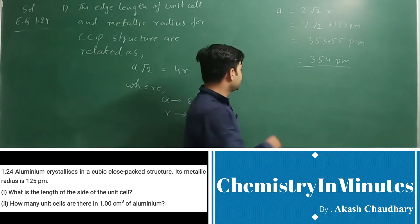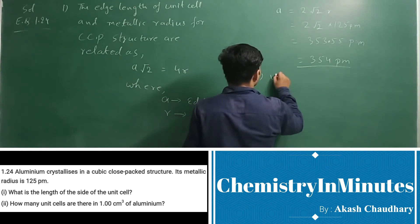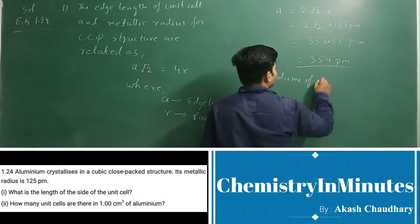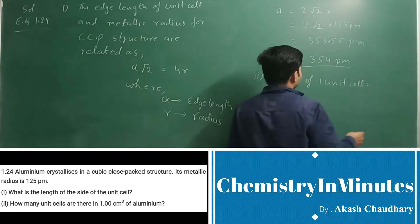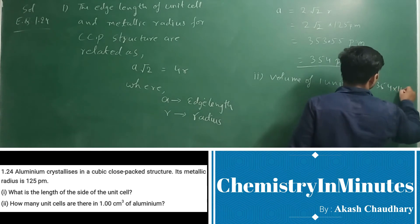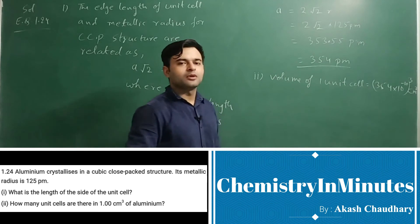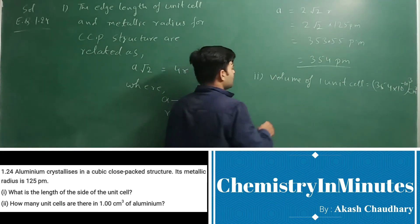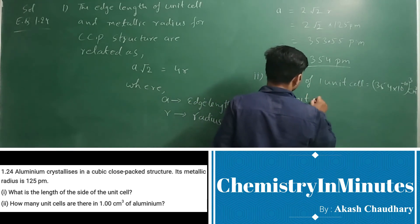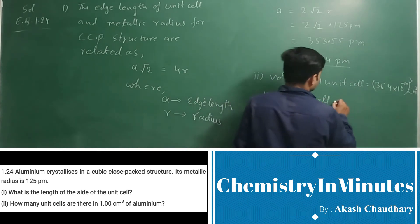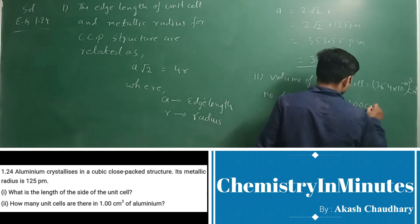Now for the second part of this question. Volume of 1 unit cell, this will come as (354 × 10^-10)³ centimeter cube. So this will be the volume of 1 unit cell.